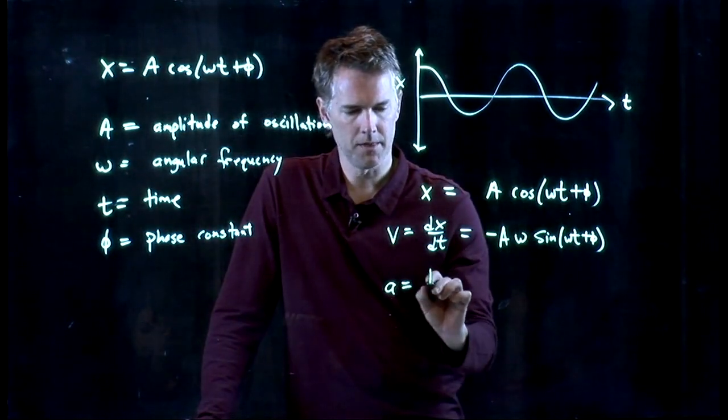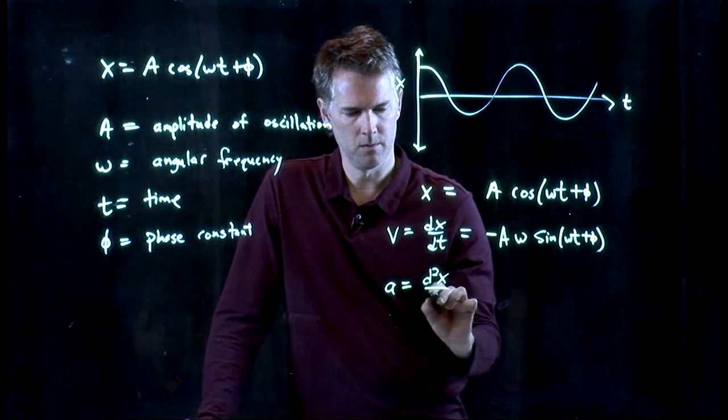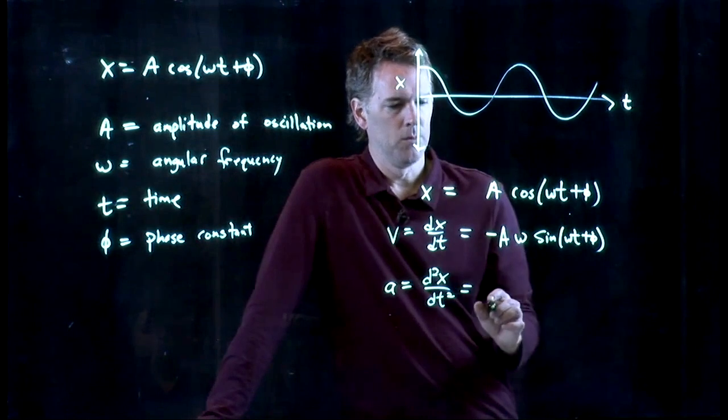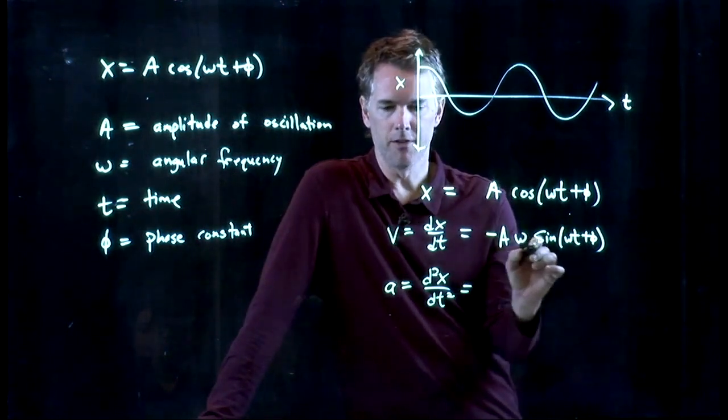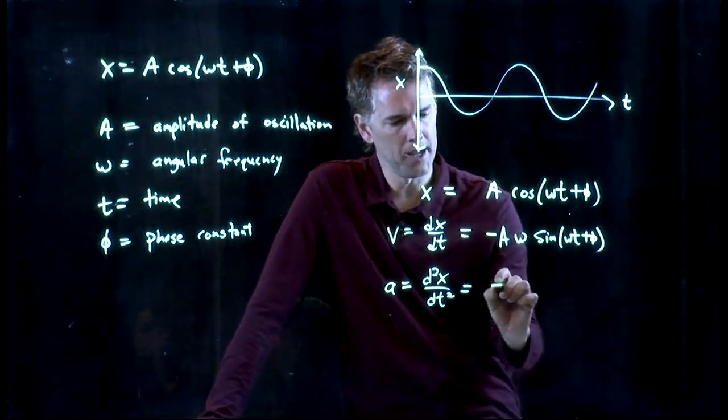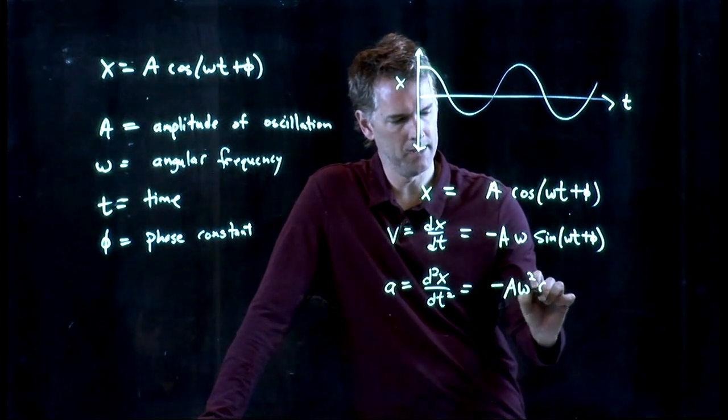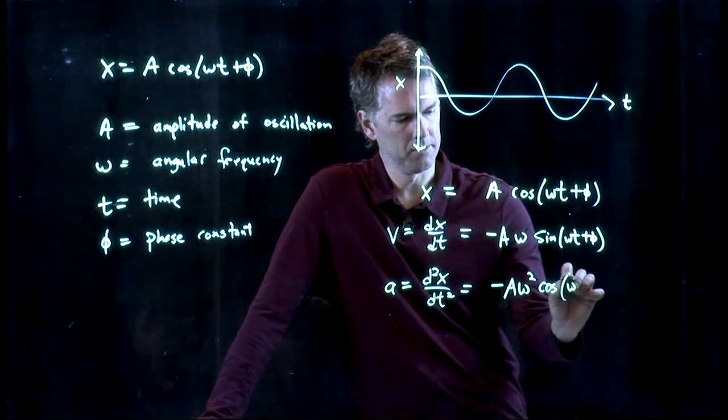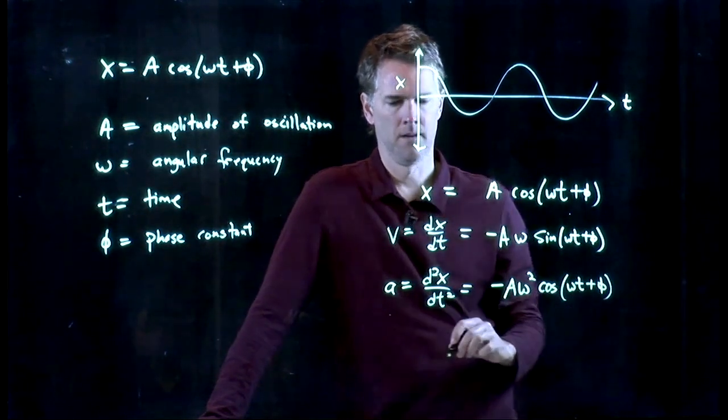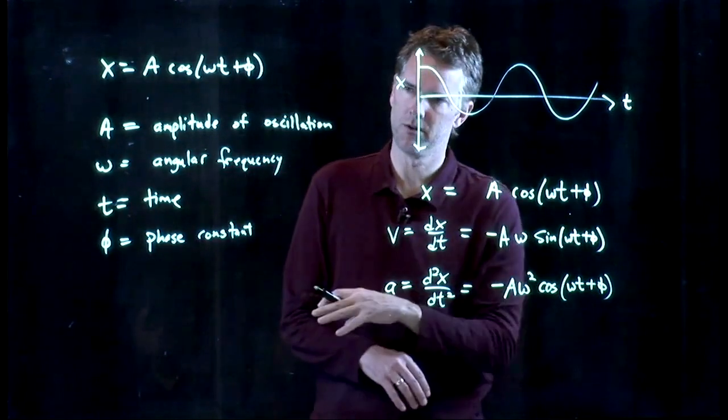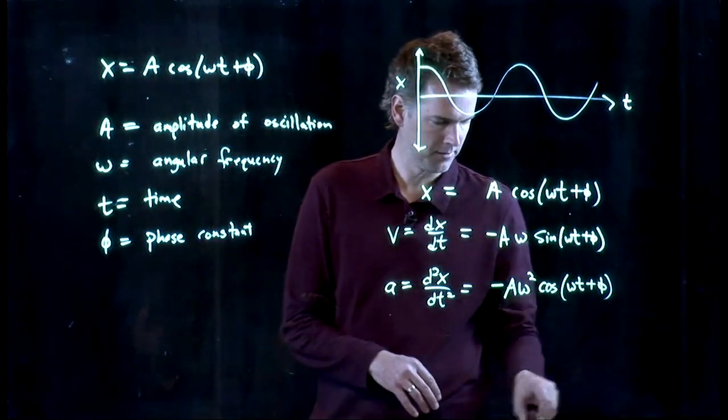And then we're going to want the acceleration, which is the second derivative of that, which is the first derivative of this. And so we get minus A, I'm going to pull out another omega, and then sine goes back to cosine. And now I have all the terms that I need to put into our force equation. So let's try it.